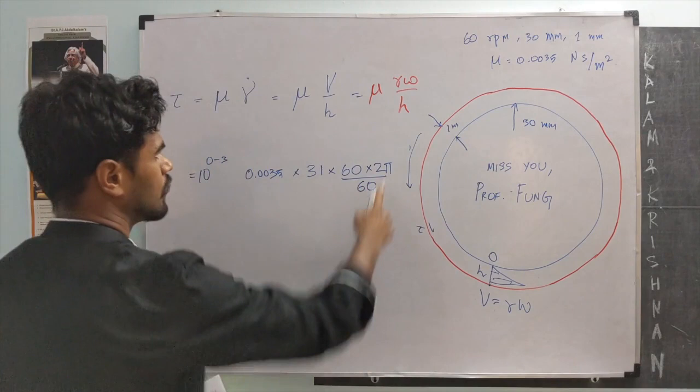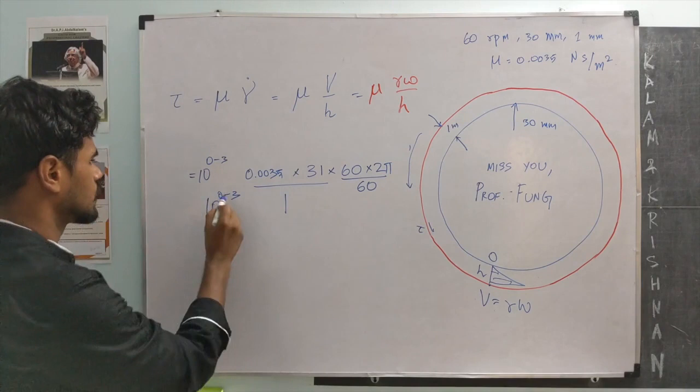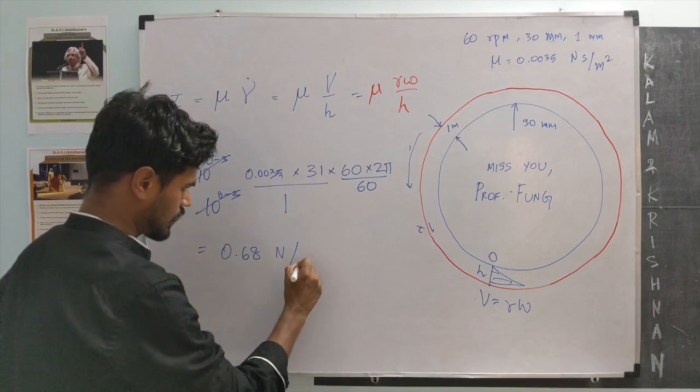And finally, the thickness over which things change is 1 mm. So, 1 and again we will have a factor of 10 here. So, these two factors will cancel out.